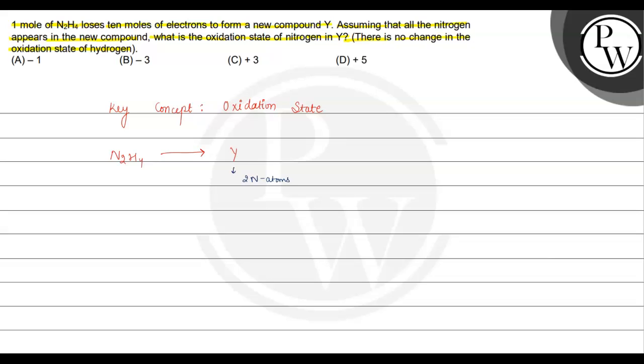Now, if we calculate the oxidation state in N2H4, let's call it X. 2X plus 4 (hydrogen) equals 0. So 2X equals minus 4, and X equals minus 2. The oxidation state of nitrogen in N2H4 is minus 2.